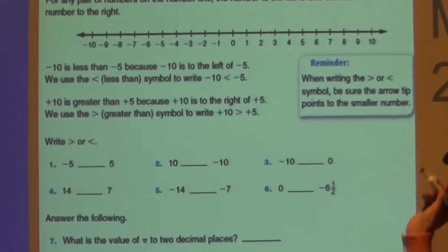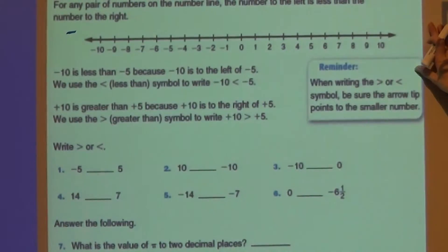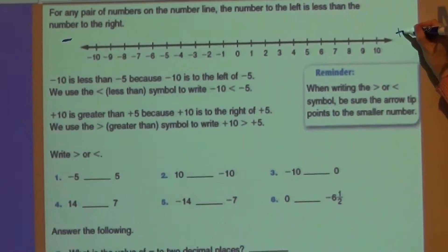So remember, whenever you move to the left on the number line, numbers get smaller. Whenever you move to the right, your numbers will get larger.